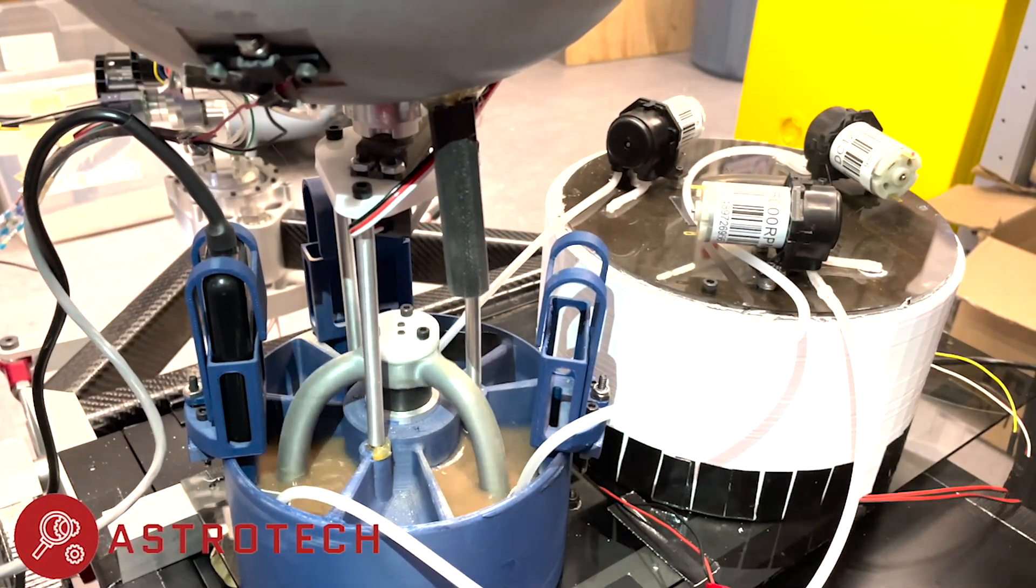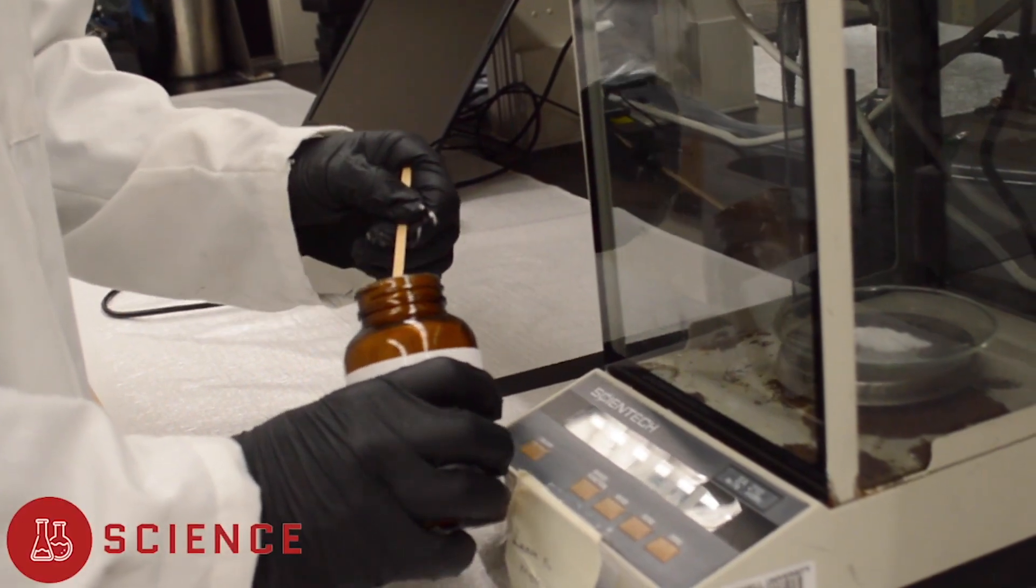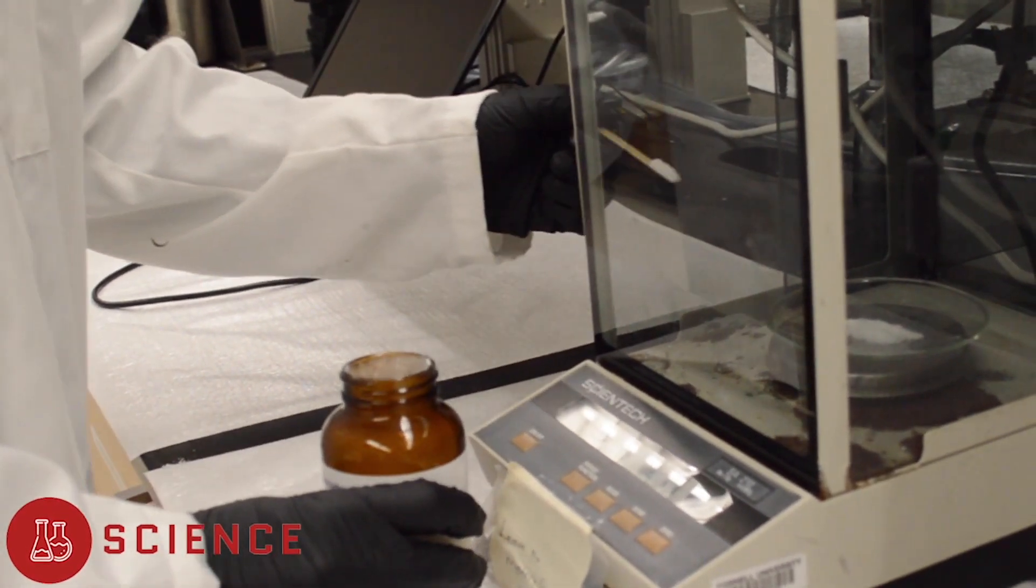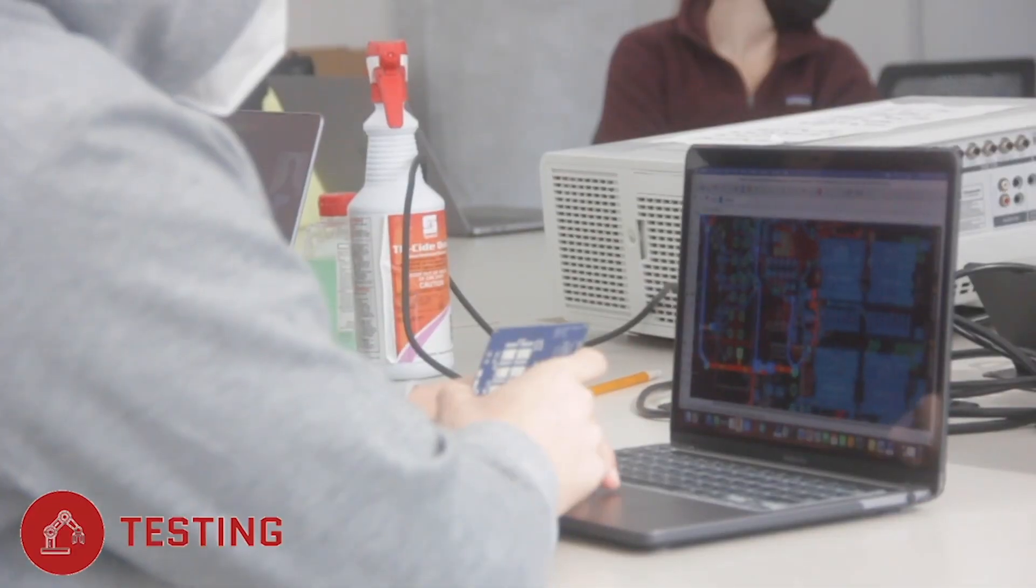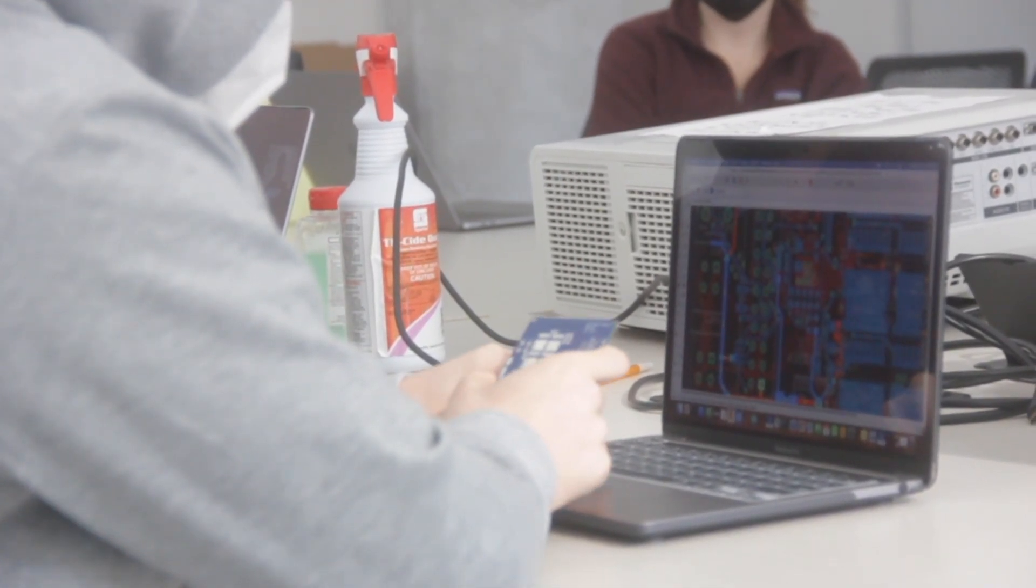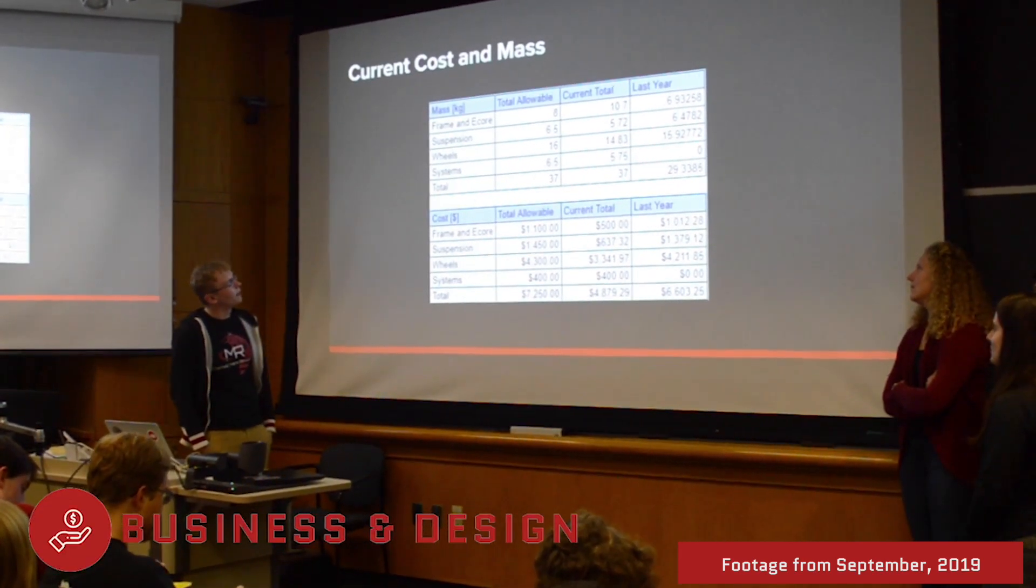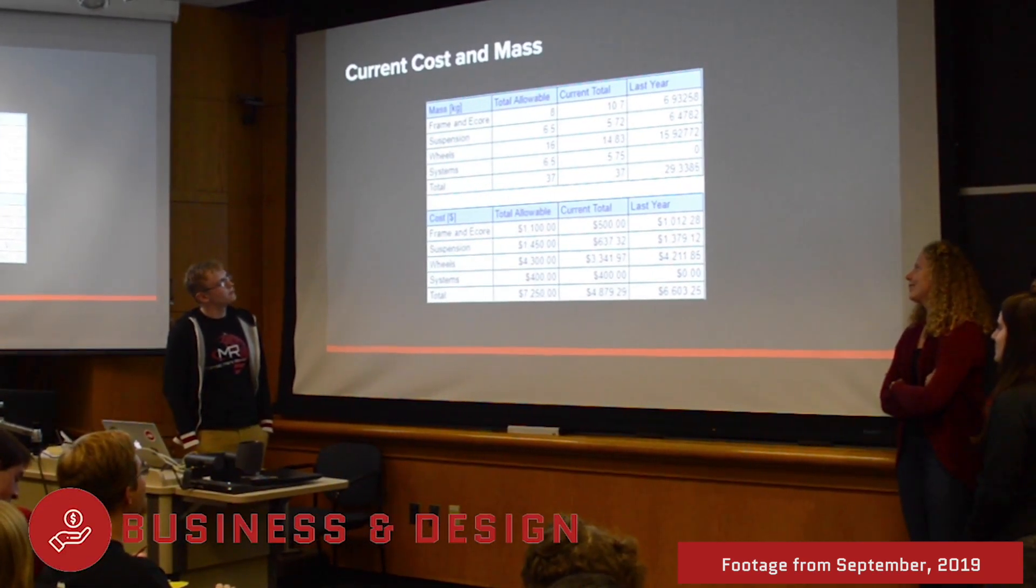The astrotech sub-team is responsible for onboard soil delivery and analysis for the science task. The science sub-team designs tests and procedures to detect life from soil and rock samples. The testing sub-team is responsible for creating system tests to ensure the development of a successful rover. And finally, the business sub-team manages teams, finances, web and presentation design, and both public and sponsor outreach.